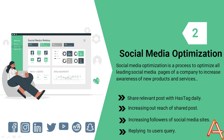Social media optimization is the process of optimizing your social media accounts and posts to increase your reach, followers, and engagement. We will discuss several strategies to optimize your social media accounts and increase your online presence. The first and most important strategy for SMO is to share relevant posts with hashtags daily. You should be sharing posts that are relevant to your audience and industry and using hashtags that are relevant to those posts. Hashtags help your posts reach a wider audience and increase their visibility.